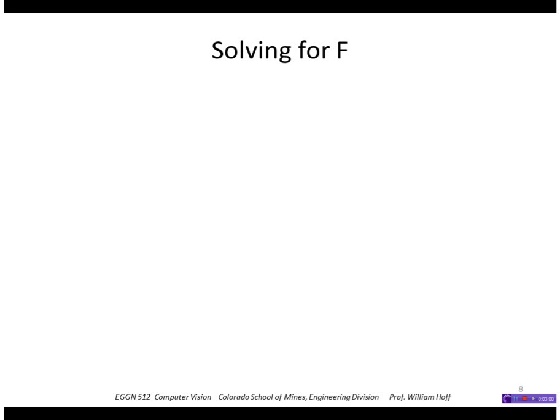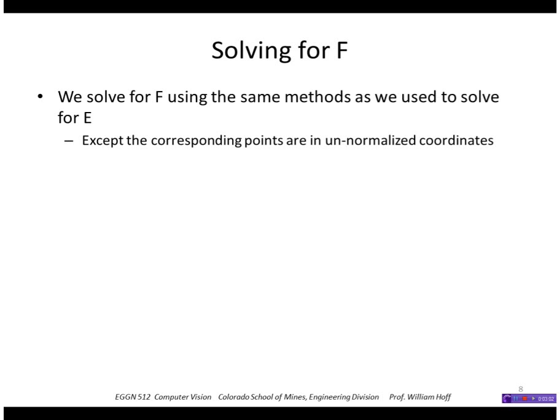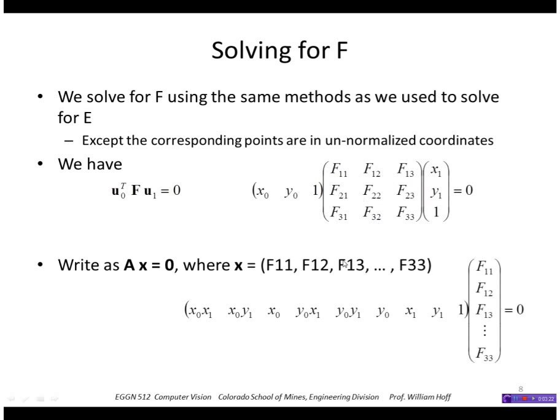We can solve for F given a bunch of point correspondences the same way we solve for E, except we're going to use the corresponding points in terms of unnormalized coordinates. We have our equation relating u0 and u1. We write that out in terms of the components of F and we collect the unknowns into a vector called x. Those are all the elements of F, and the knowns are in these rows here of the matrix A.